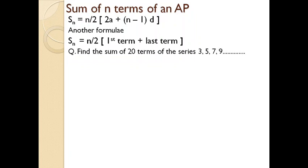Let's try this case: find the sum of 20 terms of the series 3, 5, 7, and 9. Here a series is given beginning with 3, going on for 20 terms, and you need to find the sum of all these 20 terms. By using the equation for the sum of n terms of an AP, we first need to find the values of a, d, and n. Here a = 3, d = 5 − 3 = 2 (second number minus first number), and n = 20.